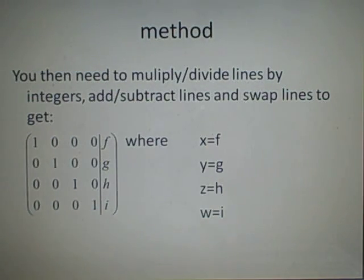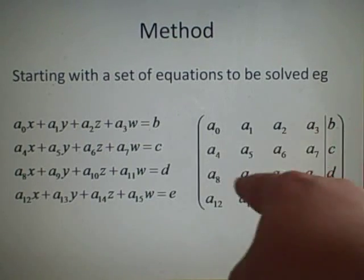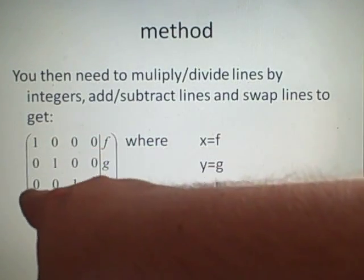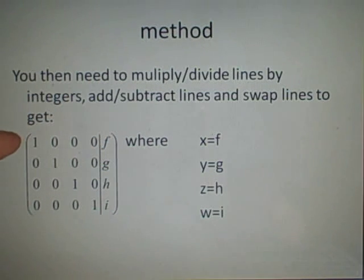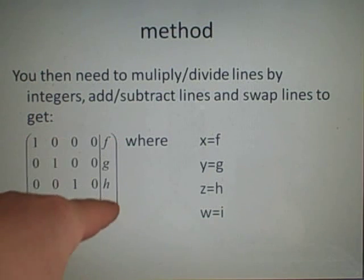We want to do this so that we get these values here in the form of the identity matrix. So we just want 1s going in diagonals and 0s everywhere else. And then our values here will be our values for x, y, z, and w.